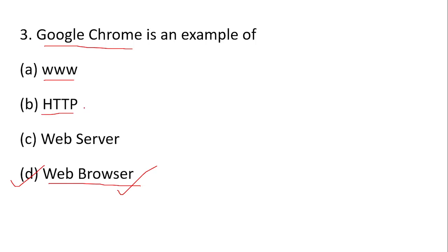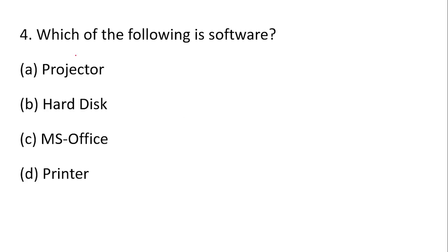HTTPS is the extended secure version used for secure web servers. The server provides service to the client computer. Which of the following is software? Software is intangible — it includes programming languages of the computer, like Microsoft Office.